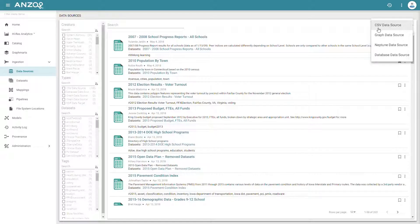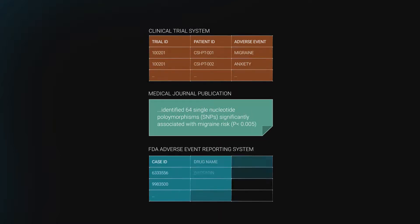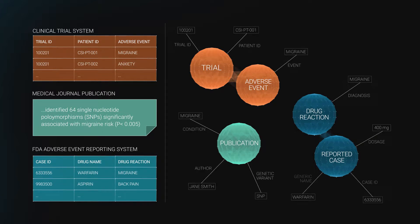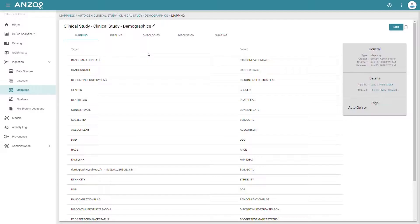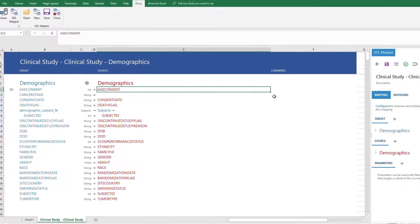Anzo ingests data automatically from any source including unstructured files and documents as well as data in existing data lakes at speeds that have shocked our customers even for their most complex data sets. And while most mappings are automatically generated, interactive mapping lets you control how data is ingested.